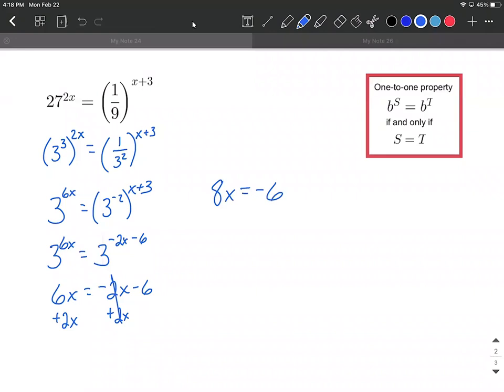Bring that negative six along, and then to get x by itself, we'll divide both sides by 8. We get x equals, with a little reducing, negative three-fourths for our solution.